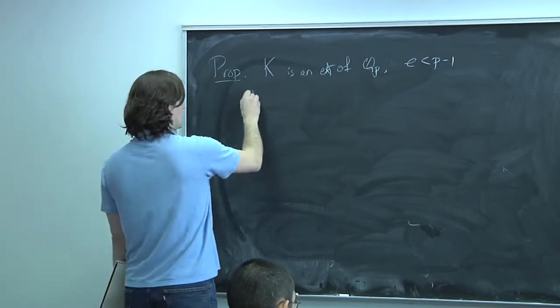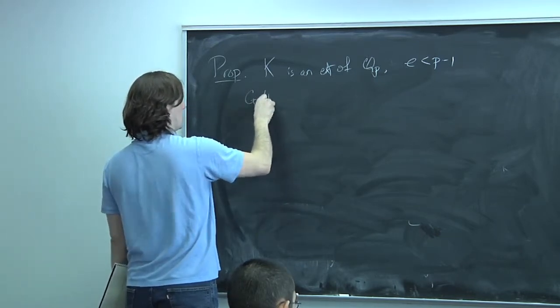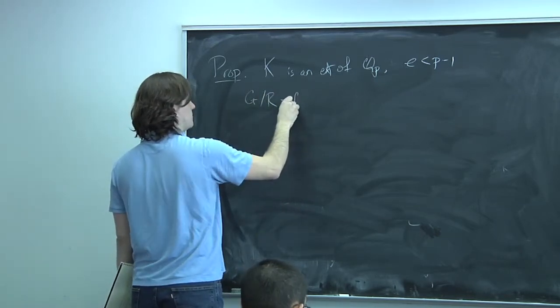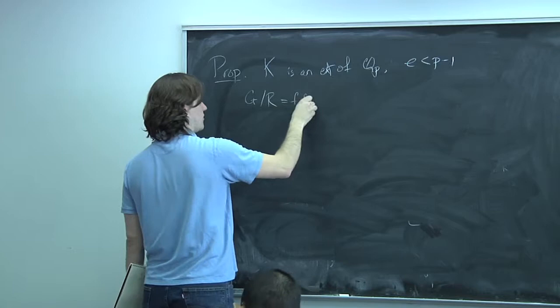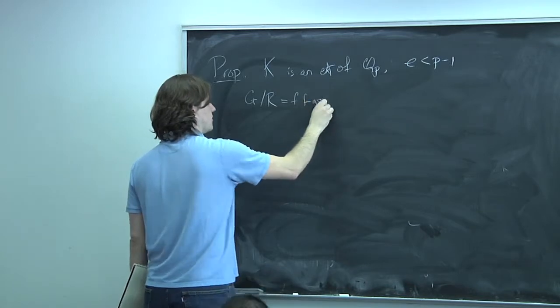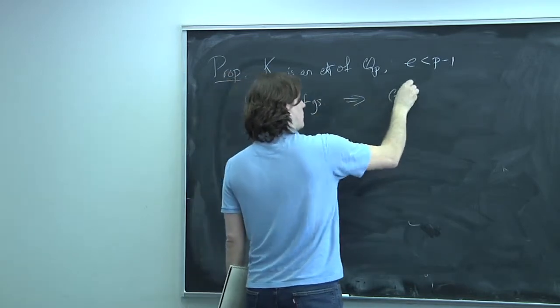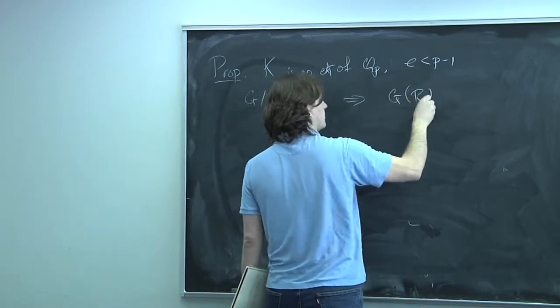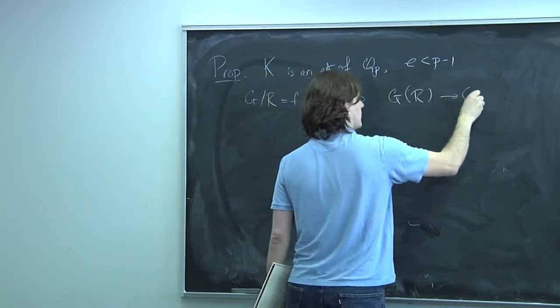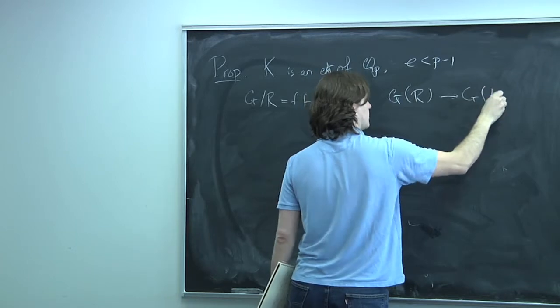Then the map from G(R) to G(k) — from the R-points to the little k-points — is injective.